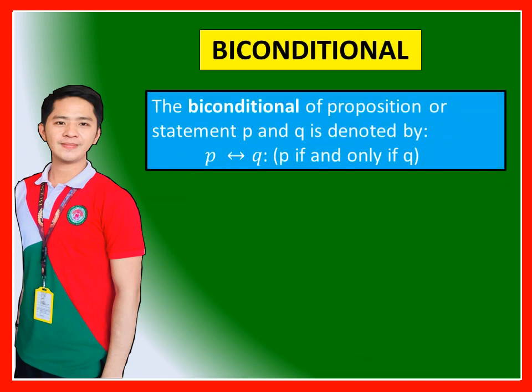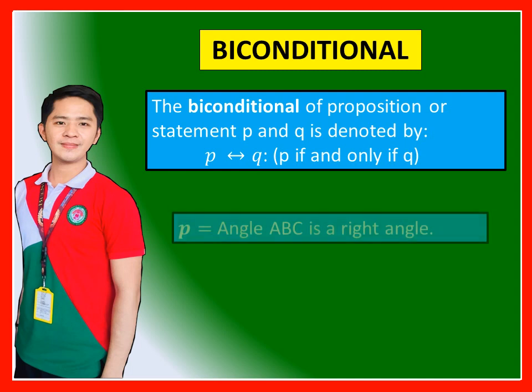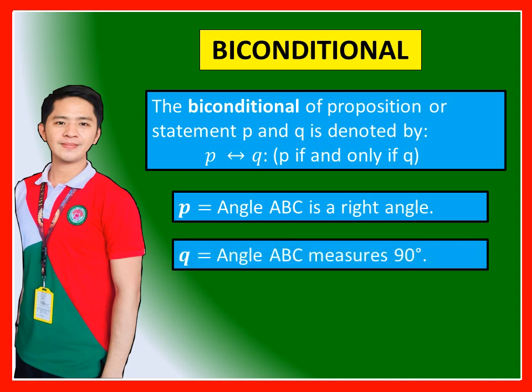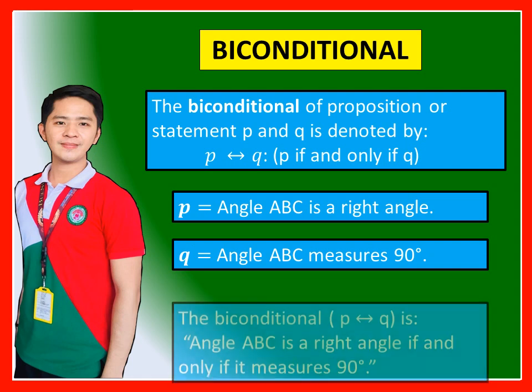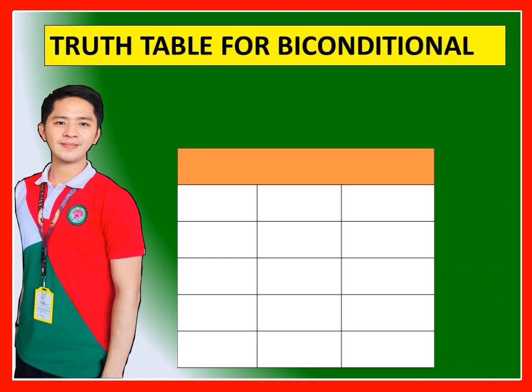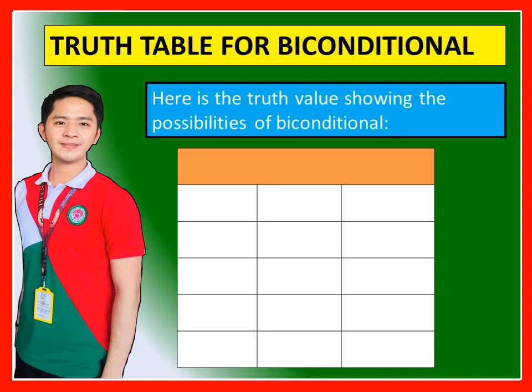Biconditional: The biconditional of propositions P and Q is denoted by 'P if and only if Q.' Example: P is 'Angle ABC is a right angle' and Q is 'Angle ABC measures 90 degrees.' The biconditional is: 'Angle ABC is a right angle if and only if it measures 90 degrees.'